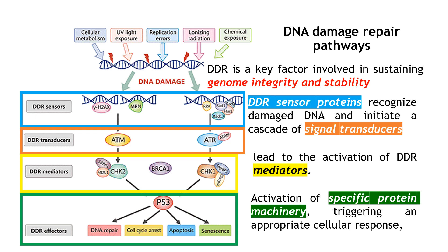There are a lot of topics that could be covered in each one of these subsections, but I just want to give you the key idea. There are multiple reasons why DNA could be damaged: UV light exposure, replication errors, radiation, exposure to chemicals, and oxygen from cellular metabolism can also be toxic. This is why the DNA damage repair pathway is so important.